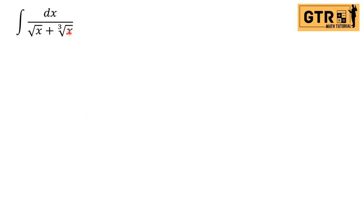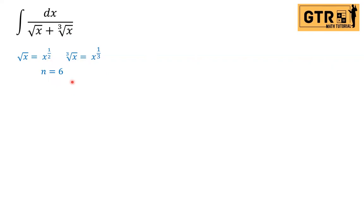We are going to use the substitution z to the n equals x. First, let us convert into fractional exponents: square root of x is x raised to one-half, and cube root of x is x raised to one-third. Then find the LCD of 2 and 3. The least common multiple of 2 and 3 is 6, so our n will be 6.